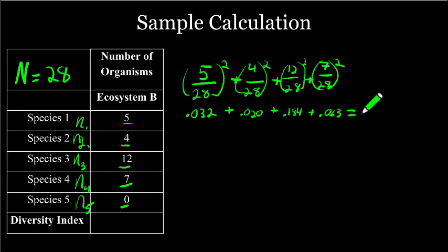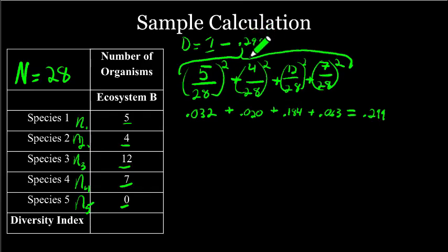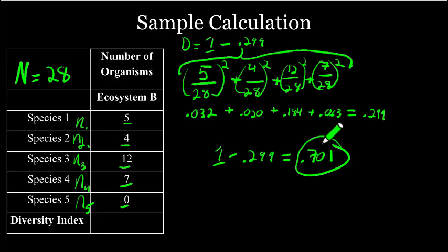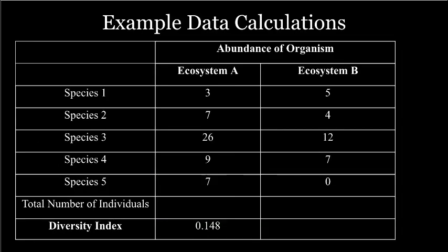We add those up and that equals 0.299. We have that answer, the total here, and remember in our formula D was 1 minus the summation of all of this. So D equals 1 minus 0.299, which equals 0.701. So 0.701 is our diversity score. We can clear this and head on back to our comparison.